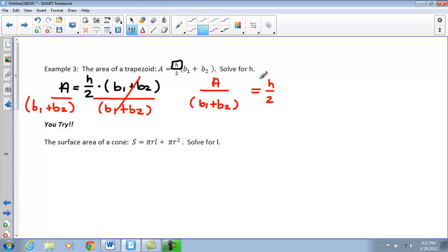So, we still want to get the H by itself. At this point, is it alone? No, it's not. So, remember when we had our equations in the first section. When we wanted to get rid of something that's being divided, we're going to go ahead and multiply by its reciprocal. So, we're going to multiply by 2 over 1. Remember, on the other side, we're also going to have to multiply by 2 over 1.